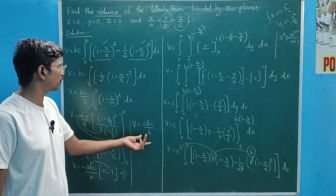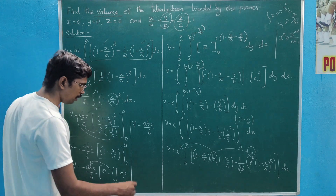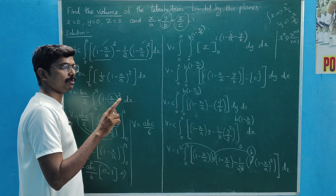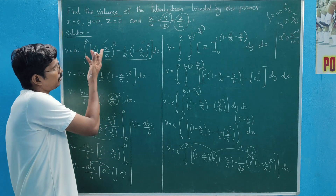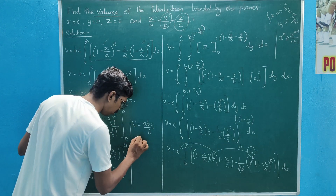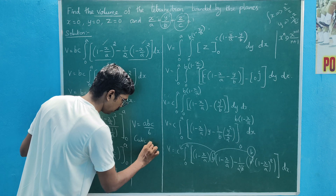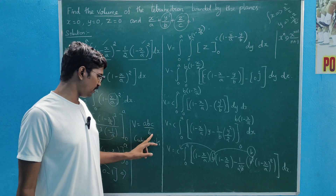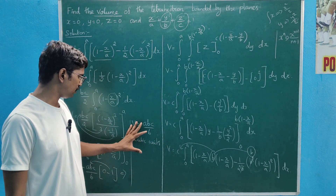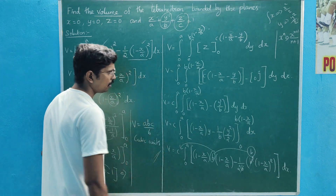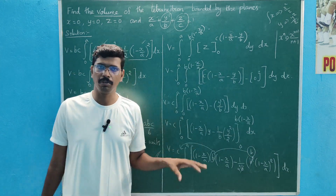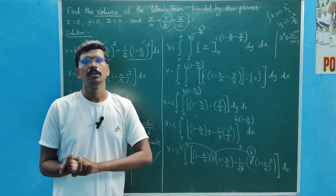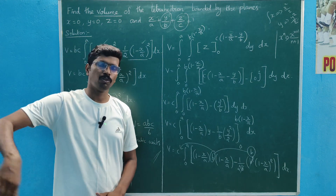So the volume is abc by 6 cubic units. This is the final answer. In the next video we will see another problem. Thank you for watching.